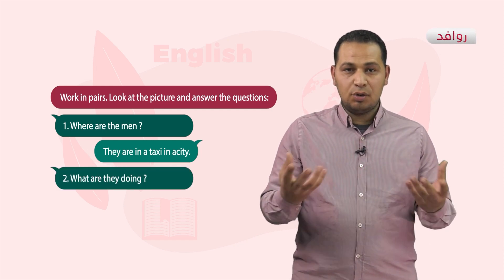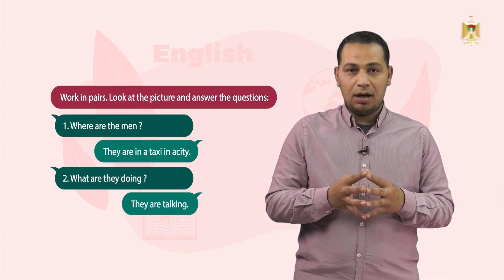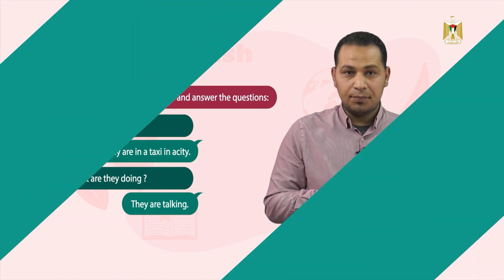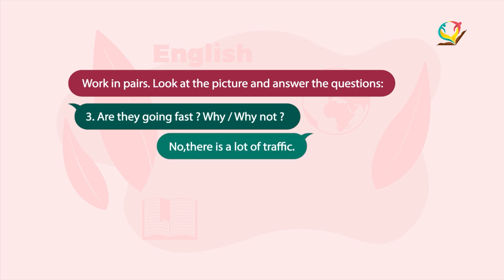Number two: What are they doing? They are talking. Number three: Are they going fast? Why or why not? No — there is a lot of traffic.